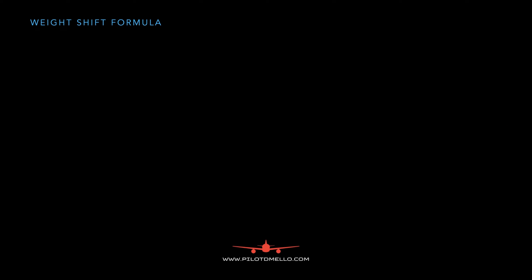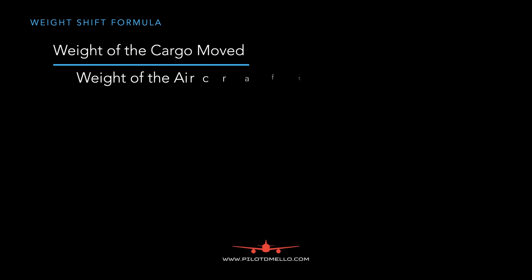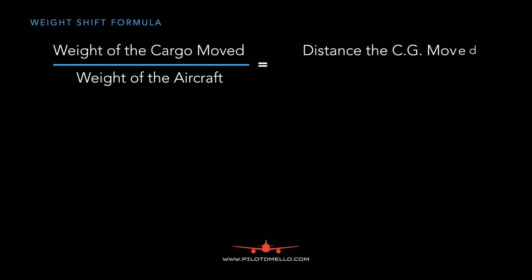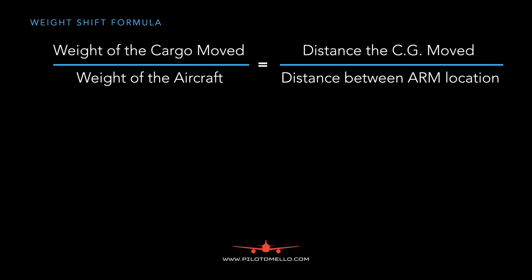Let's look at a simple formula. The weight of the cargo moved divided by the weight of the aircraft equals the distance the center of gravity moved divided by the distance between the arm locations — that is, the distance between the first and the second compartment.